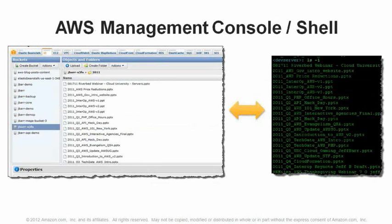Here is a view after I've done that. On the left, you can see the AWS Management Console with my Jbar-S3 FS bucket selected and a number of objects in it. On the right, you can see the shell from my local Linux server where I copied files from the Linux server into the /S3 FS directory.